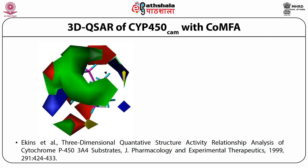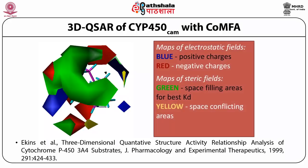Here I show a CoMFA predictive map for CYP450 CAM. Taking the compounds and building the map, blue represents positive charge contribution — meaning that interaction site strongly interacts with a positive charge. Red represents negative charge. Green is the area which is sterically unavailable, and yellow is a conflicting area that can have both green and red character. By substituting different groups at those positions, one can find out what the receptor picture could look like.